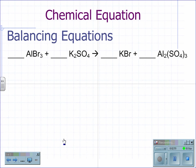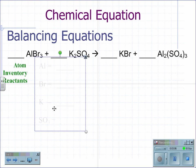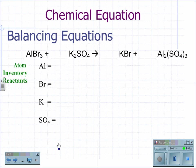Our last example is aluminum bromide AlBr₃ plus potassium sulfate K₂SO₄ yields potassium bromide KBr plus aluminum sulfate Al₂(SO₄)₃. Start again by giving the atom inventory. Note that I have created the atom inventory with aluminum, bromine, potassium, and I have kept the sulfate as SO₄ since it appears on both sides of the equation.